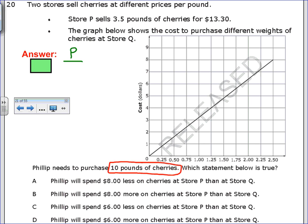Store P, I can buy, for $13.30, I can buy 3.5 pounds. Well, I want to know how much it costs per pound, so I take the amount of money that I'm paying, and I divide that by how much I'm getting. And when you do that, you're going to get 3.80 over 1. So that means that one pound is going to cost $3.80.